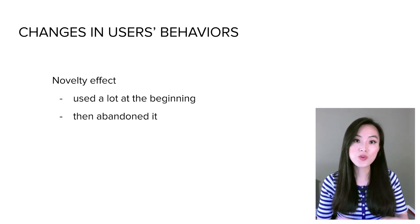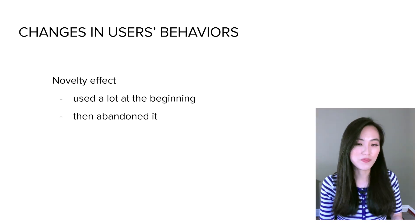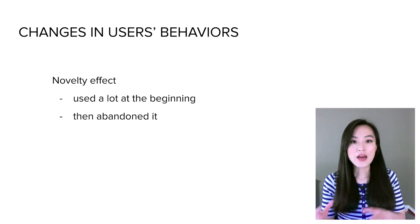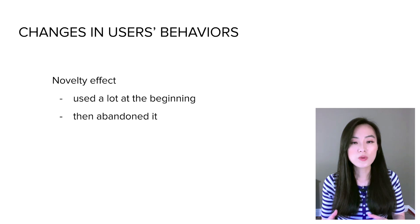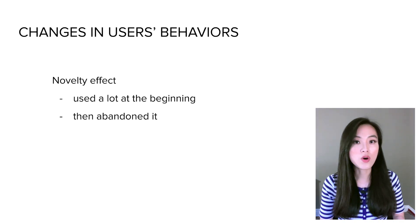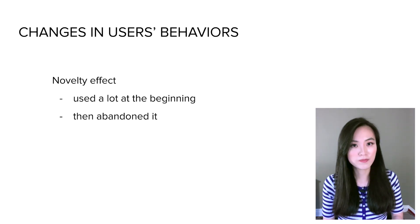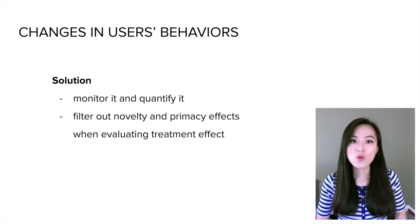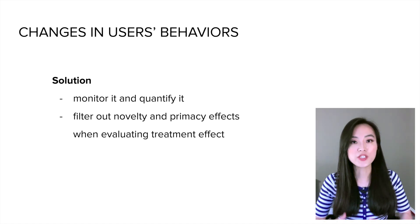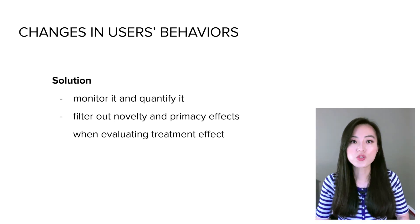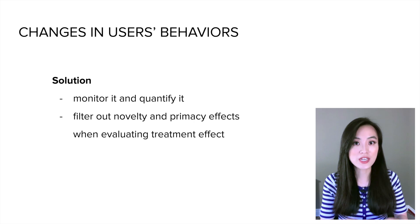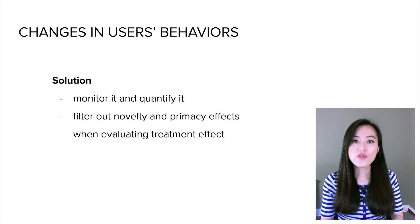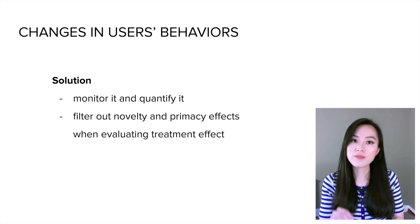Note that both novelty and primacy effects are not stable — as you can tell from the example, they happen only during the initial period after users see a new feature or product. While there's nothing we can do to prevent these effects, what we should do is monitor if such effects exist and quantify them, so that we can filter them out when evaluating the real treatment effect.